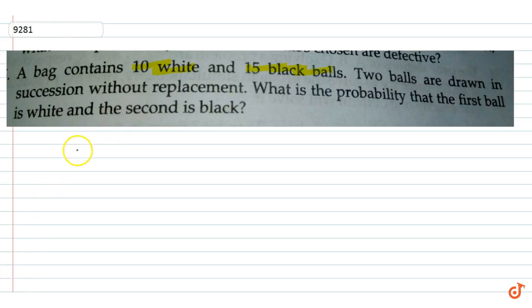So the probability of the first ball being white, probability of W₁, is equal to the total 10 white balls out of total 25 balls. The probability is 10 by 25, which equals 2 by 5.